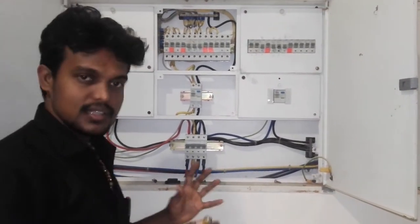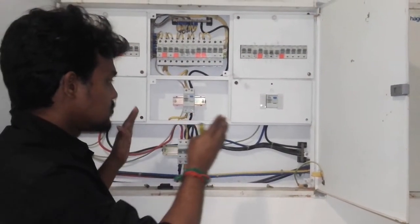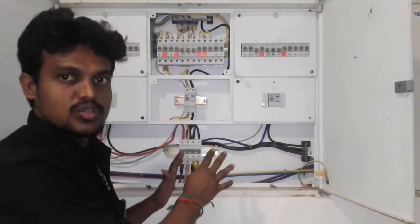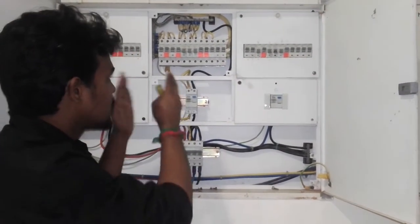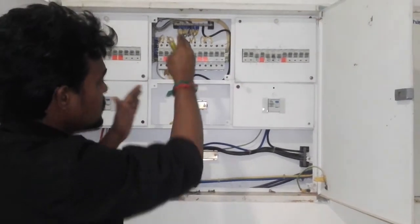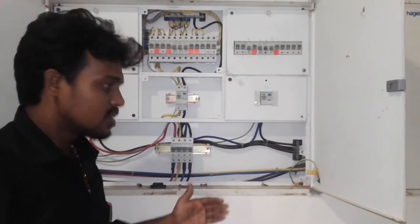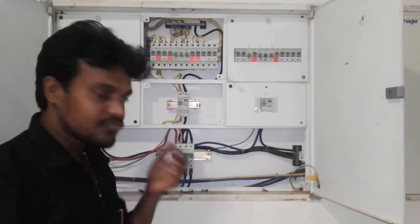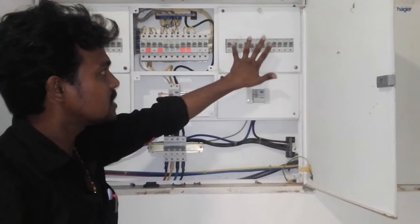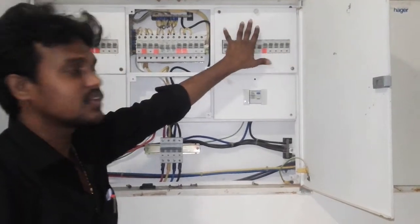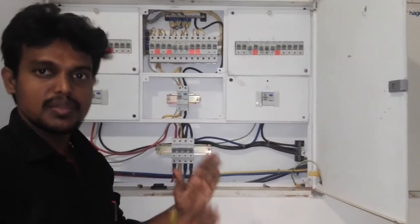This is the LDB. You can get the wiring, place the MCB, and get the DDP wiring. This is a TPN DB — a 12-way TPN DB.